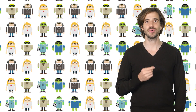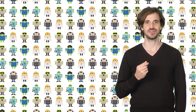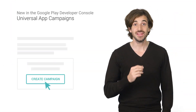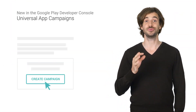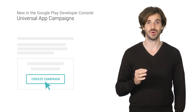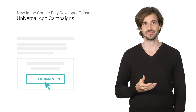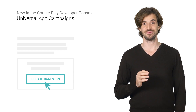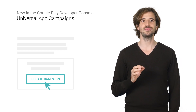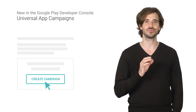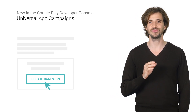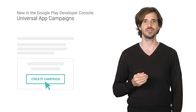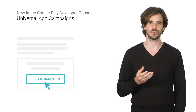Now that you know where users are coming from, you want to start acquiring new users, which is critical to your success. There are many ways to acquire new users, and one common way is to pay for app install ads. That's where the new universal app campaigns come in. They are the easiest way to promote your Android app to interested users across Google Play, Google Search, YouTube, and the Google Display Network.